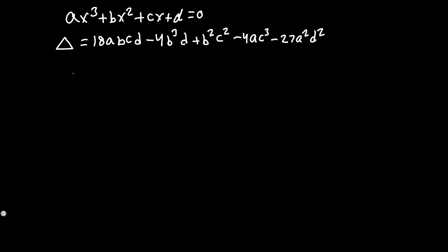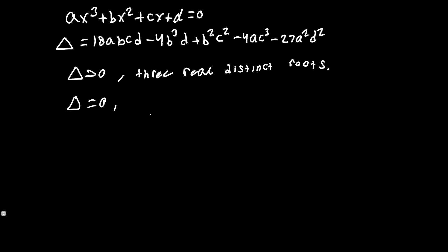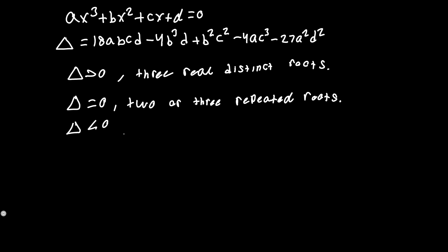For the discriminant when it is greater than 0, the cubic has three real roots. When the discriminant is equal to 0, this is a bit more complicated than for the quadratic — it either has two or three repeated roots. And when the discriminant is less than 0, the cubic has one real root and two complex roots.